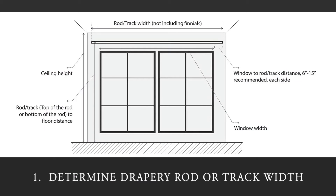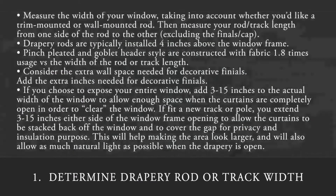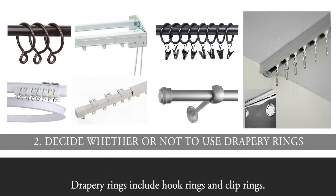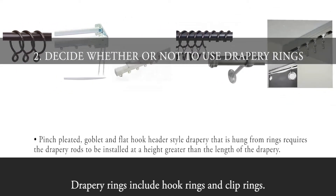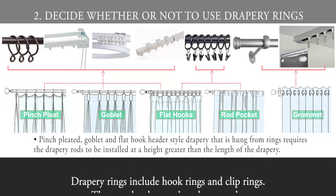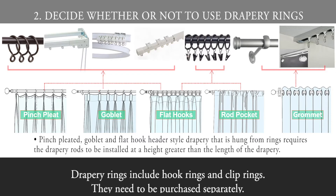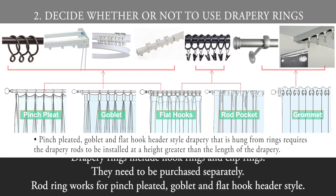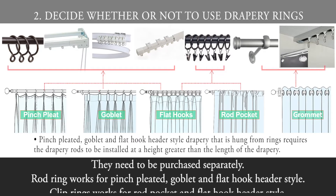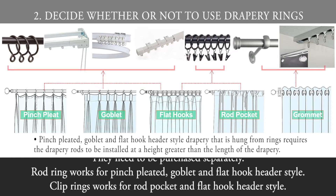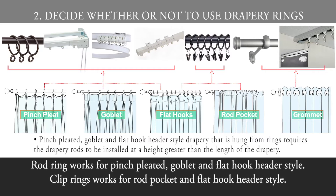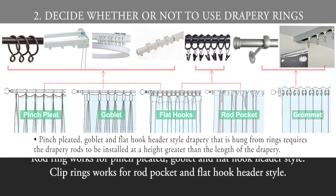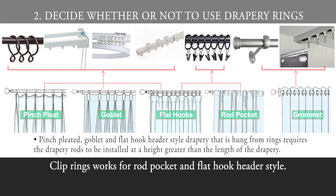1. Determine drapery rod or track width. 2. Decide whether or not to use drapery rings. Drapery rings include hook rings and clip rings, and they need to be purchased separately. Rod rings work for pinch pleated, goblet, and flat hook header styles. Clip rings work for rod pocket and flat hook header styles.